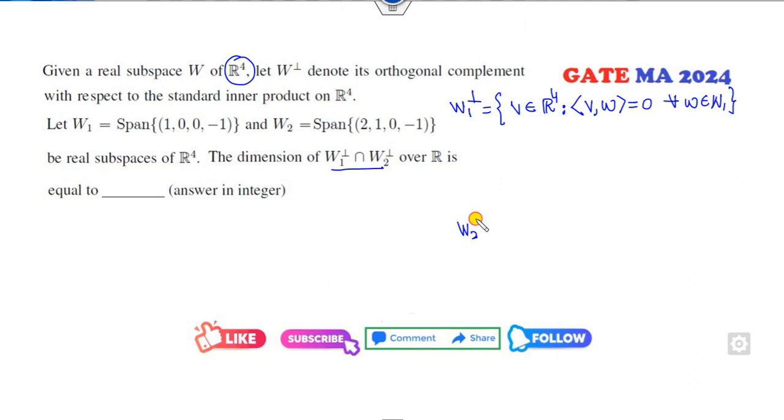Similarly, the orthogonal complement of W2 means collection of all those elements in R⁴ such that V dot W will be zero for all W in W2.